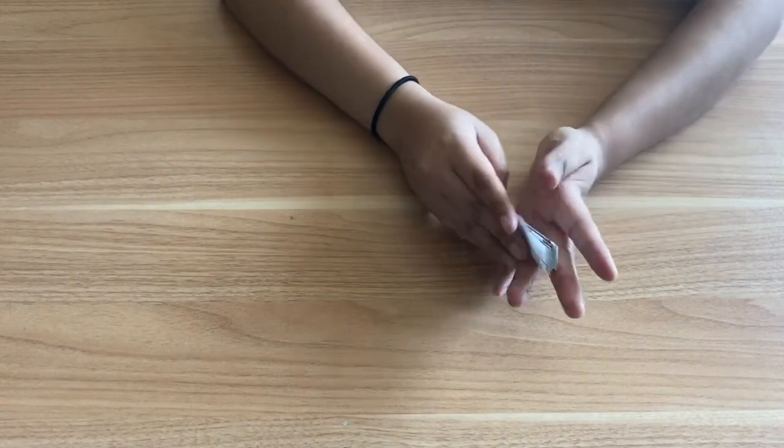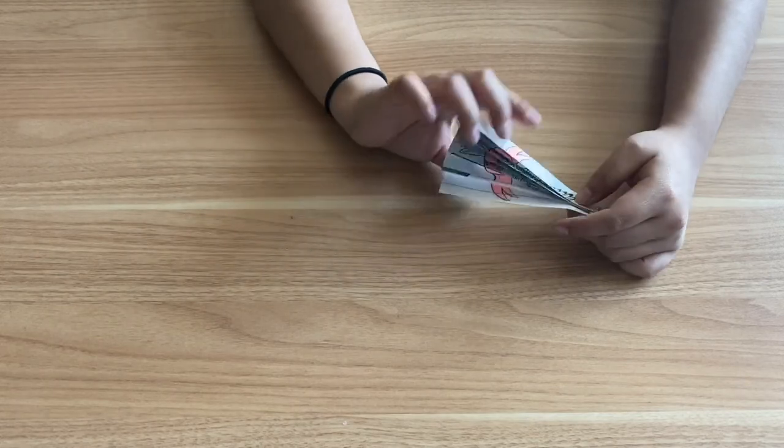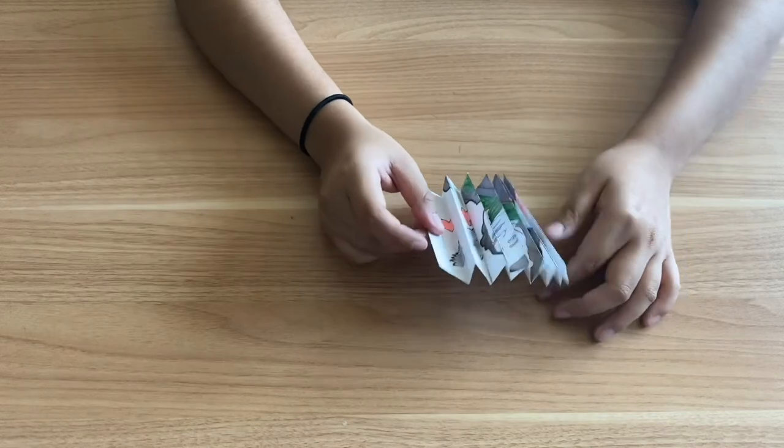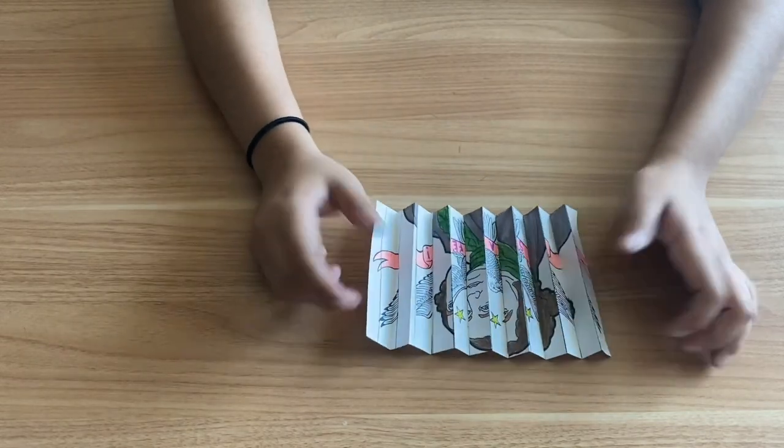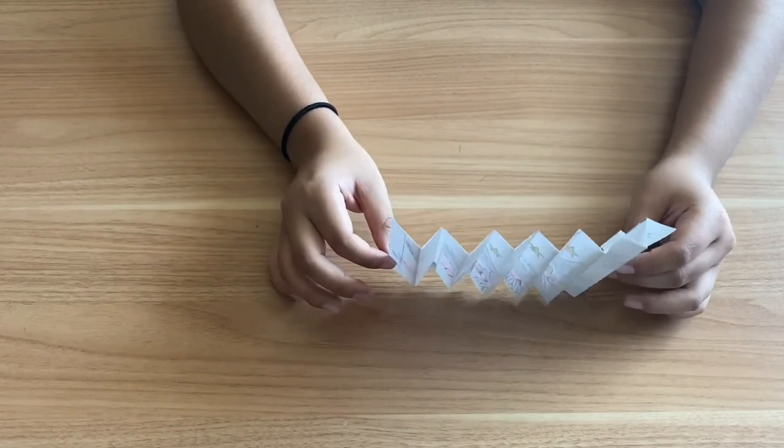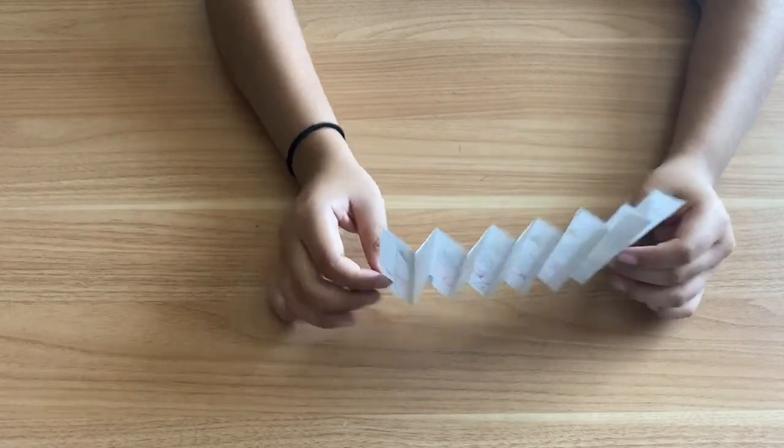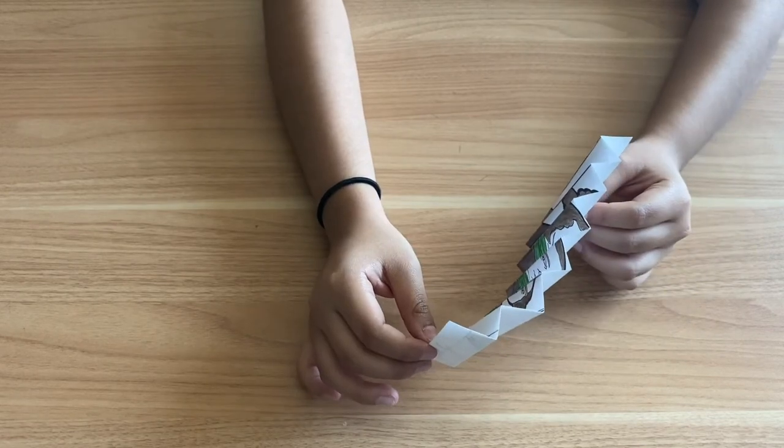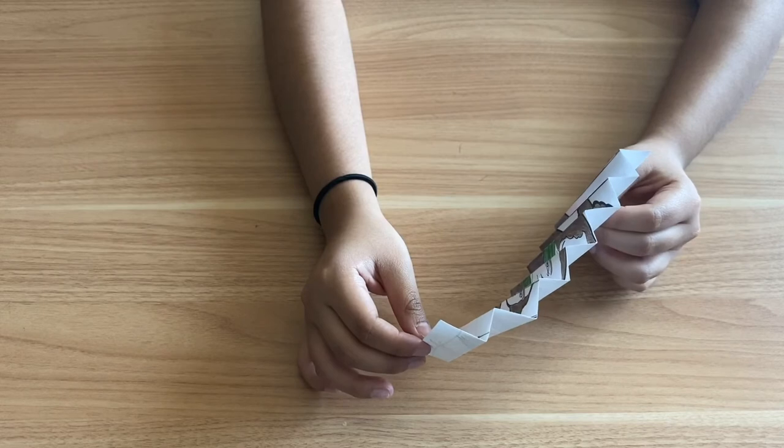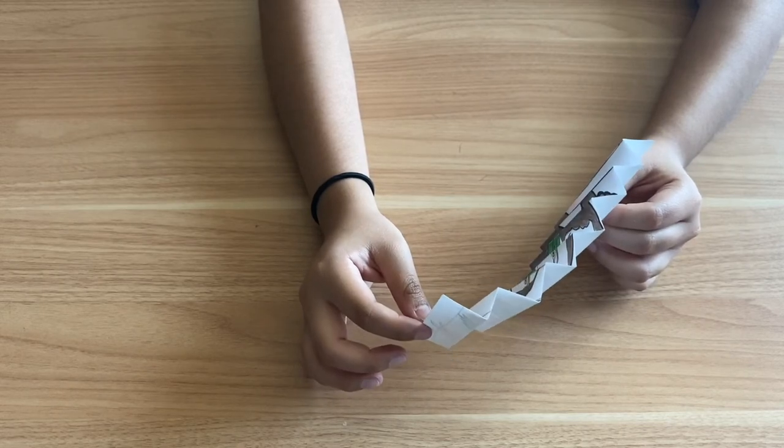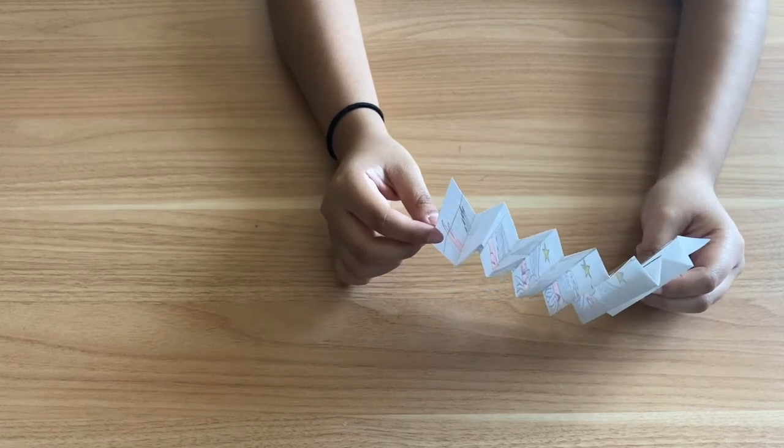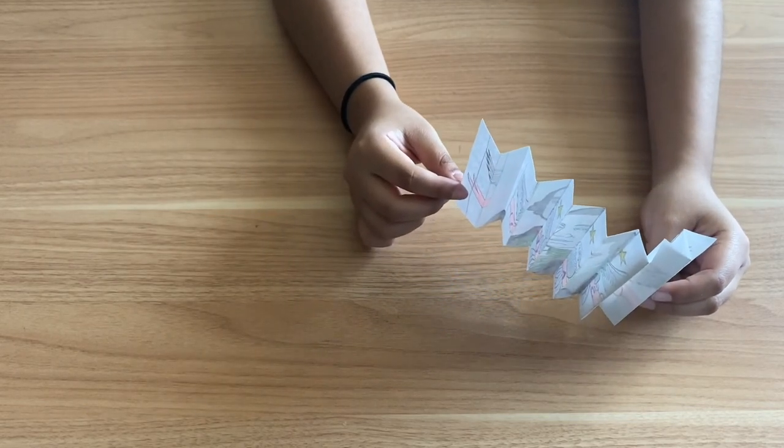And once you finally are done folding your papers, it will look like this. Go ahead and flip it over. Basically grab it, place it facing you, and tilt it to the right. You'll see that the second image disappears, and the first image connects together, and you'll be able to see the image perfectly. Go ahead and tilt it to the left. The eagle will disappear, and you'll see George Washington.